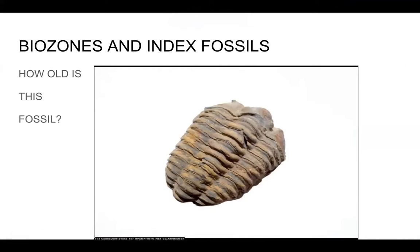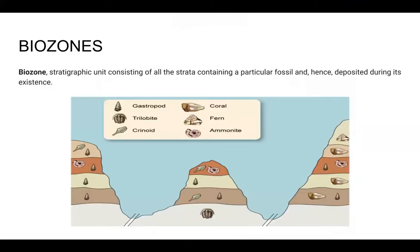Biozones are a stratigraphic unit consisting of all the strata — strata meaning layers — containing a particular fossil, deposited during its existence. Look at this layer with an ammonite and a crinoid in it. This same layer could be in North America, in Africa, and on the European continent — it's the same strata, the same biozone, with the same biota.